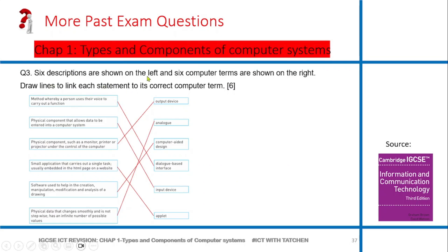The next thing is six descriptions are shown on the left and six computer terms are shown on the right. Draw lines to link each element to the correct computer term. Whenever you find a question like this, start with the ones you know - that's the best way. These questions are very easy but you might fail them because you made a mistake in one, so it messes up everything. Do the ones you're very sure of. Once you do that, you're moving from what you know to what you don't know.